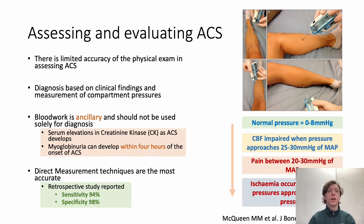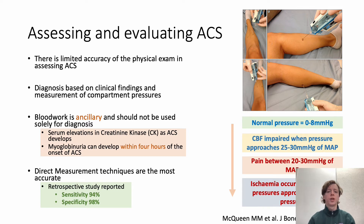There is limited accuracy of the physical exam, so the diagnosis must be made based on clinical findings and, if possible, measuring compartment pressures. Blood work should be additional but shouldn't be used solely in diagnosis. As ACS further develops, rising creatinine kinase and myoglobinuria can develop within four hours. Direct pressure measurement is the gold standard. Normal compartment pressure sits between 0 and 8 mmHg; capillary blood flow becomes impaired when pressure approaches 25–30 mmHg, and pain typically occurs between 20–30 mmHg. Tissue ischemia and inadequate perfusion occur when tissue pressures approach the diastolic pressure.